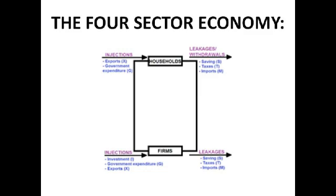This is a diagram of the four-sector economy — the real flow of income. Injections are the stuff going in and leakages or withdrawals are the stuff coming out. Withdrawals are money that isn't passed on in the circular flow, so they reduce national income. For example, spending on imports sends money away to other countries and it doesn't come back — except through exports.